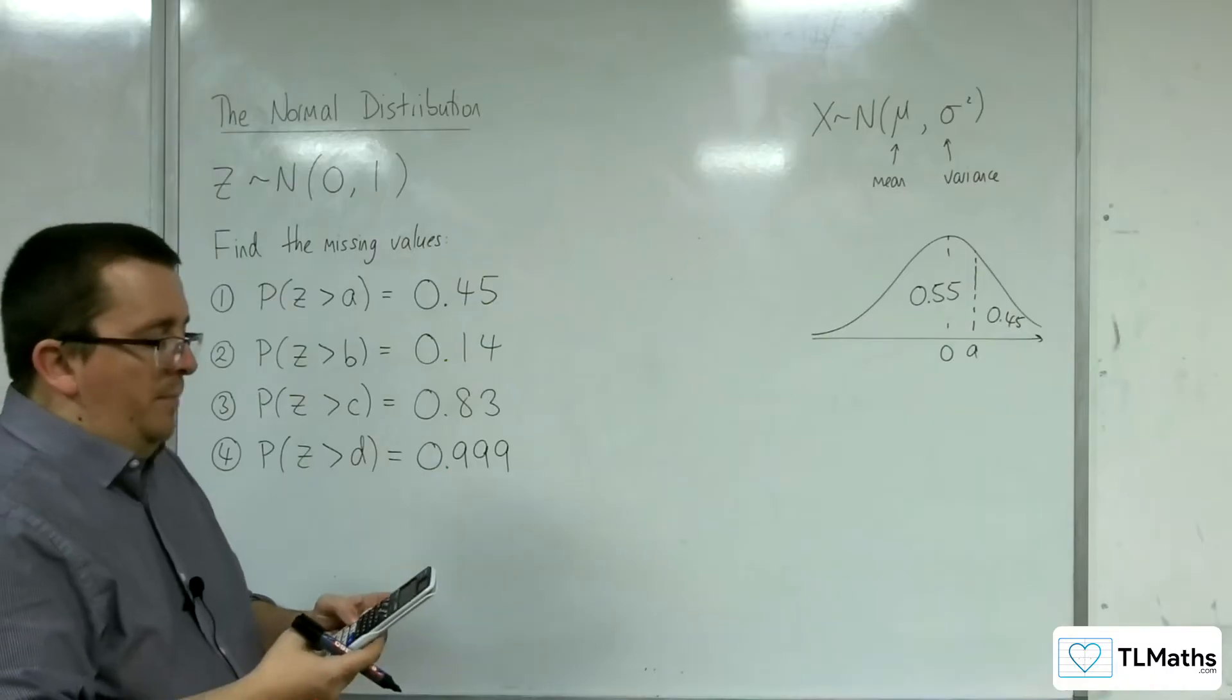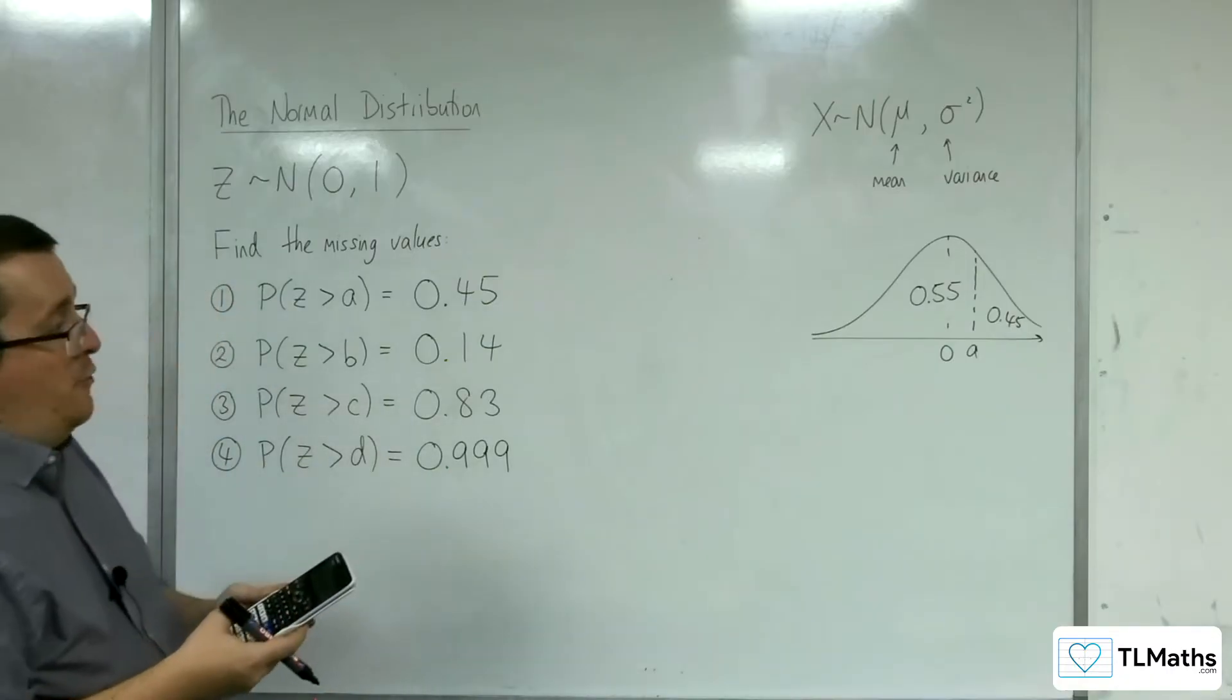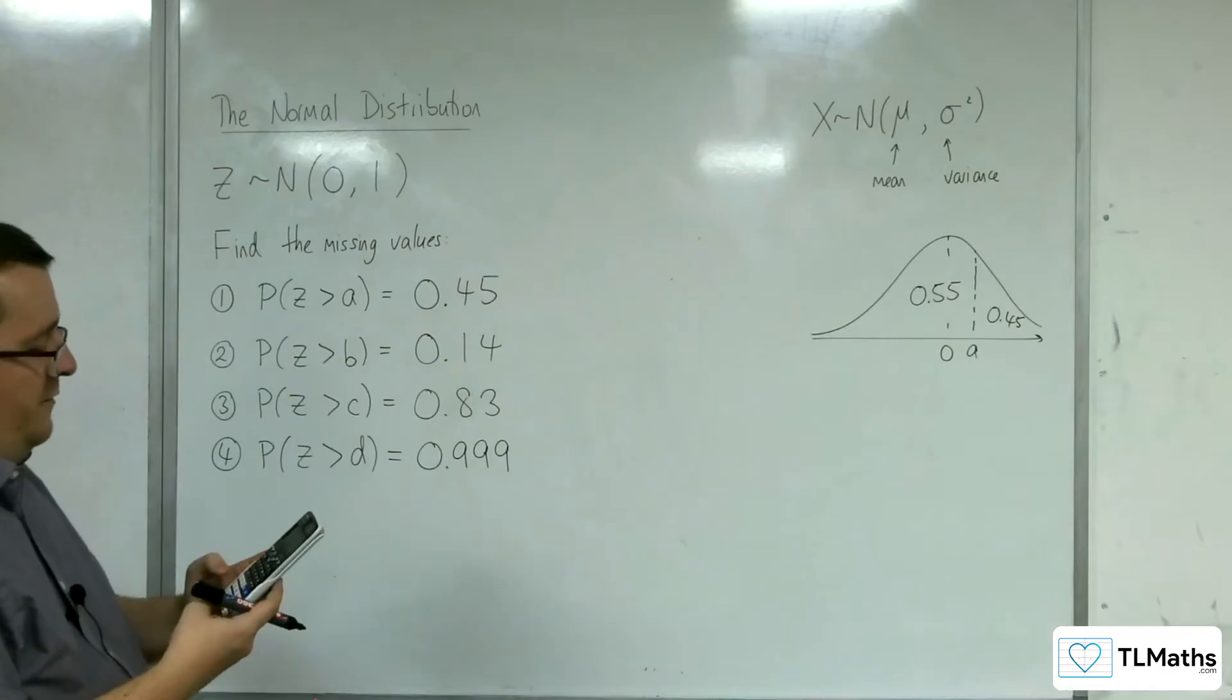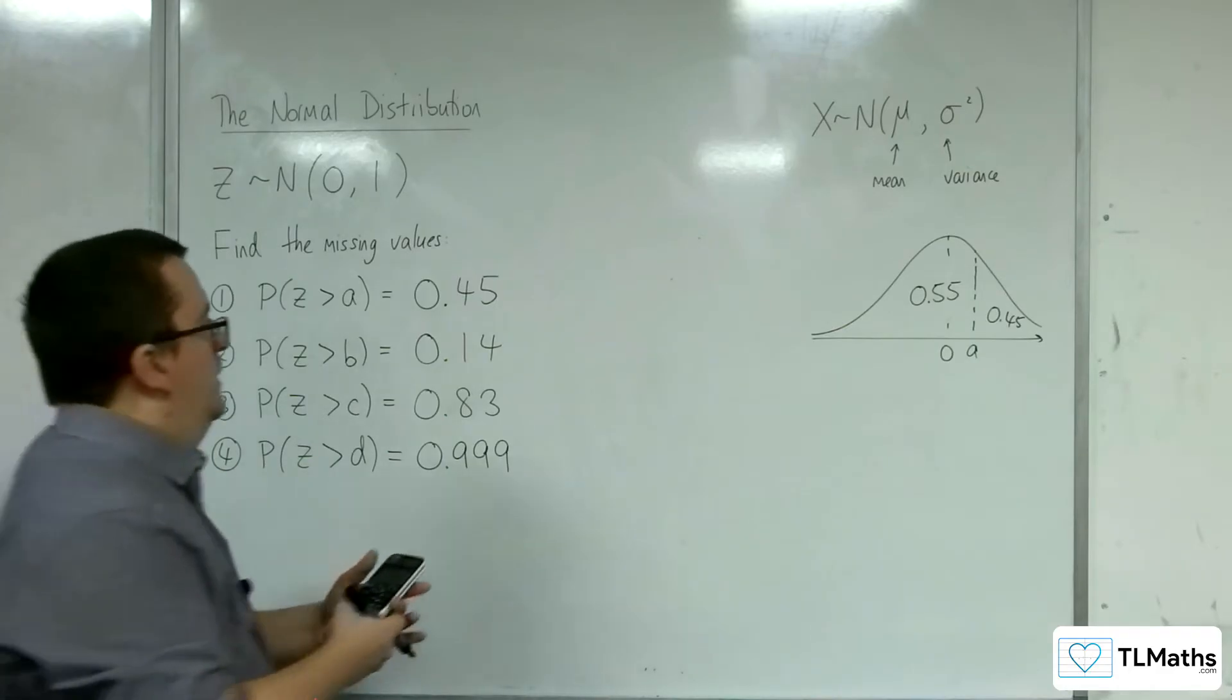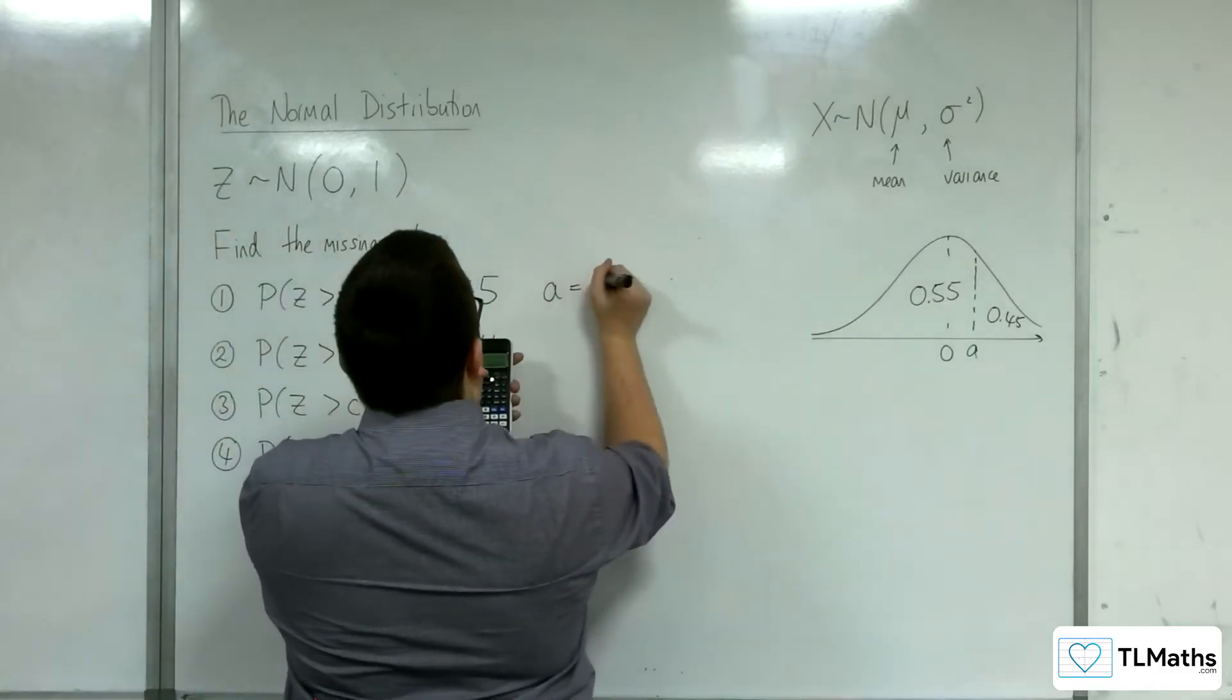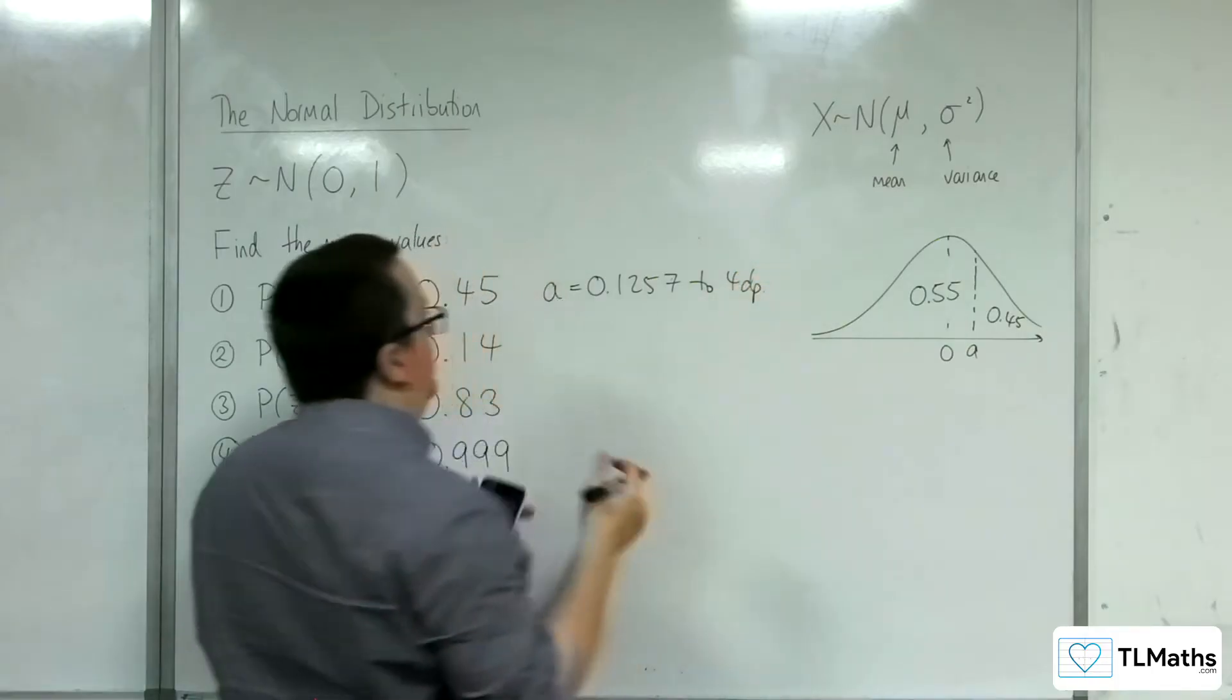Go to menu number 7, then number 3 for inverse normal. The area is 0.55, sigma is 1, mean is 0, and we get A equals 0.1257 to 4 decimal places.